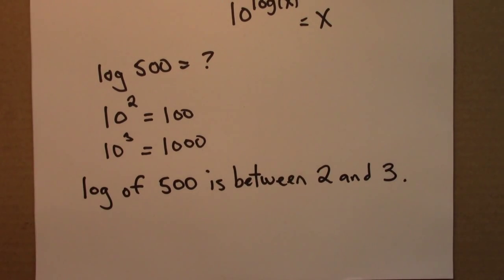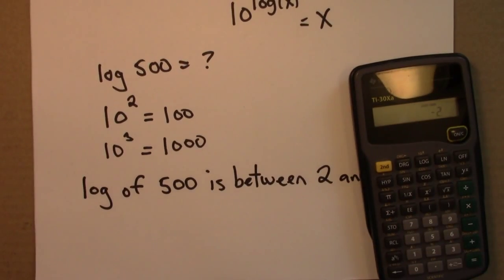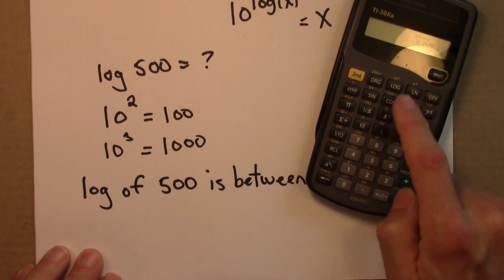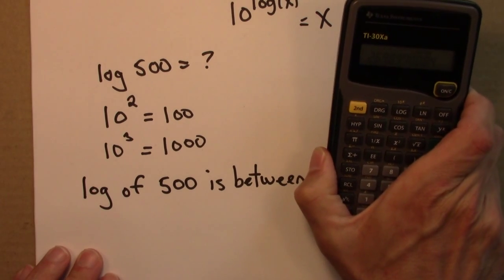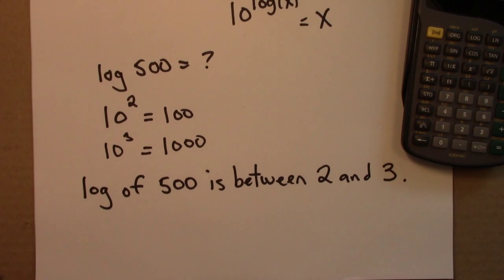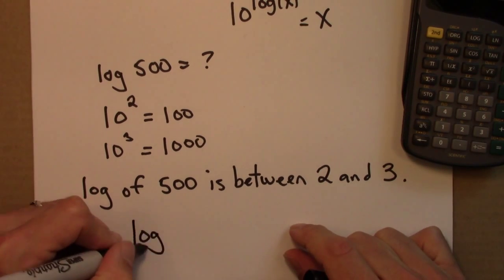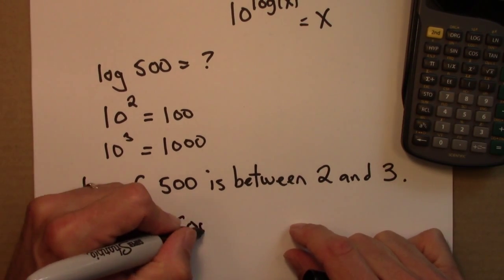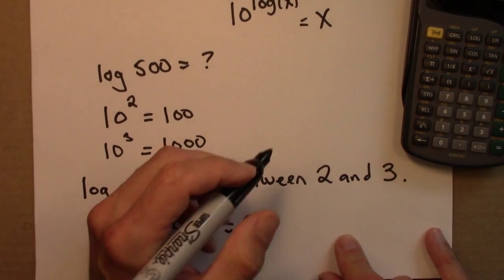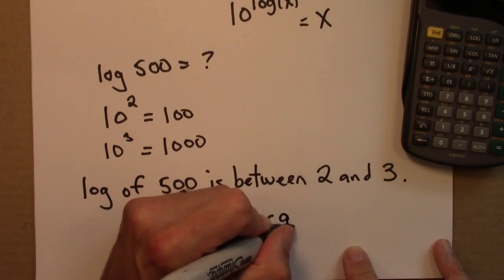If you needed an exact value, you could look it up on a calculator. So I can do that. 500 log about 2.699. So it turns out that log of 500 is about 2.699.